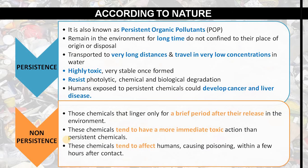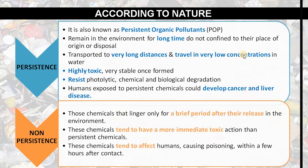Now according to nature there are two kinds of waste: persistent and non-persistent. Persistent waste is also known as Persistent Organic Pollutants, or POPs. Persistent waste remains in the environment for a longer time, does not stay confined to the place of origin or disposal, and can transport over very long distances.